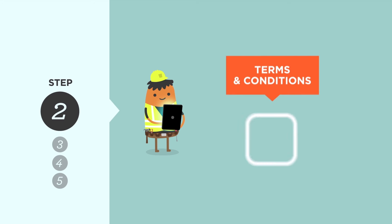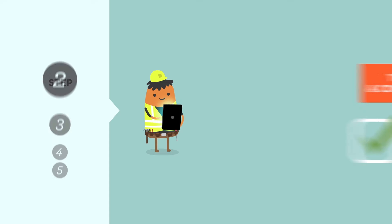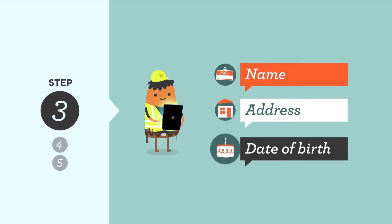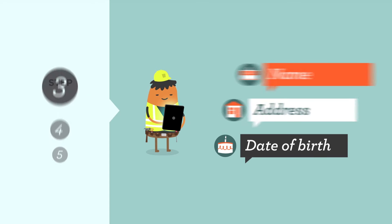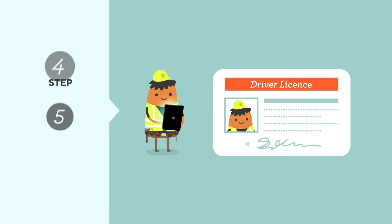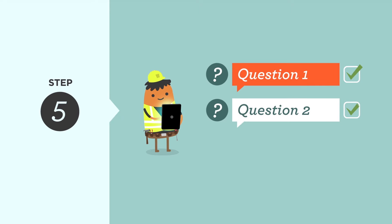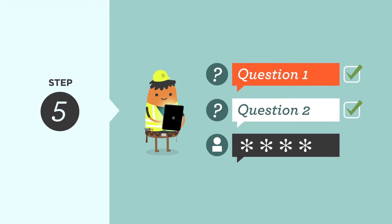Once you have agreed to the terms and conditions, you're ready to go. To start, enter some personal details including your name, address and date of birth. Next, enter the details on your form of ID. This will make sure your account is unique to you. To finish, set up your security questions, then choose a password for your account.